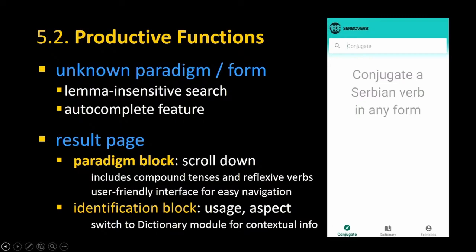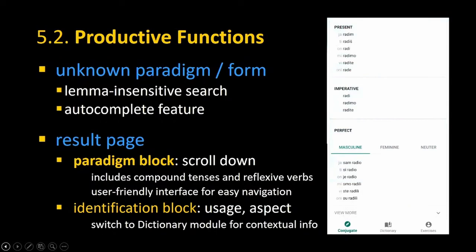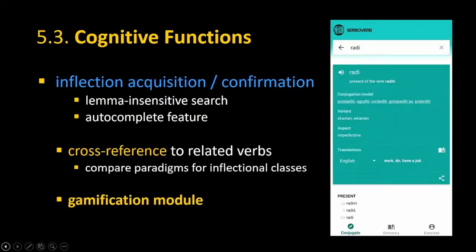For productive functions, if someone doesn't know how to conjugate a Serbian verb or doesn't know a particular form, they can search and the paradigm block becomes the most important element. The interface is user-friendly — users can scroll up and down, and swipe left to right for masculine, feminine, and neuter forms. For more information on syntactic patterns, users go to the dictionary module and get example sentences that are translated.